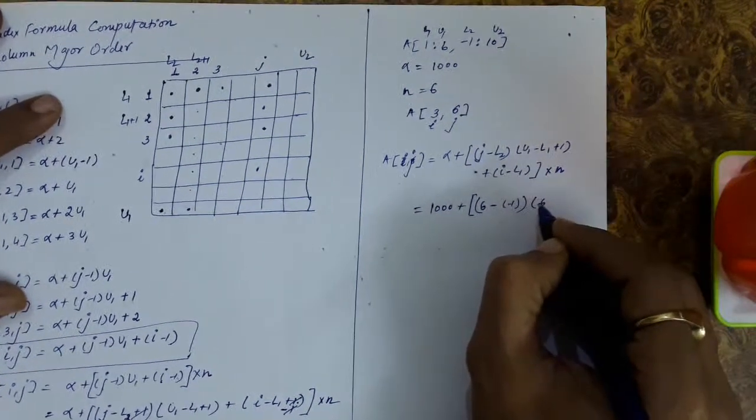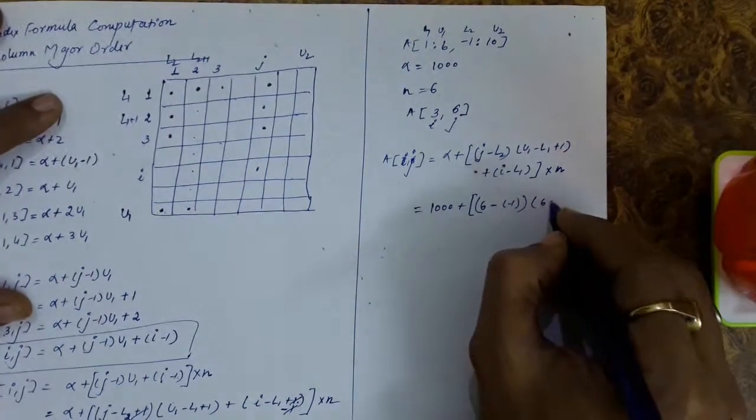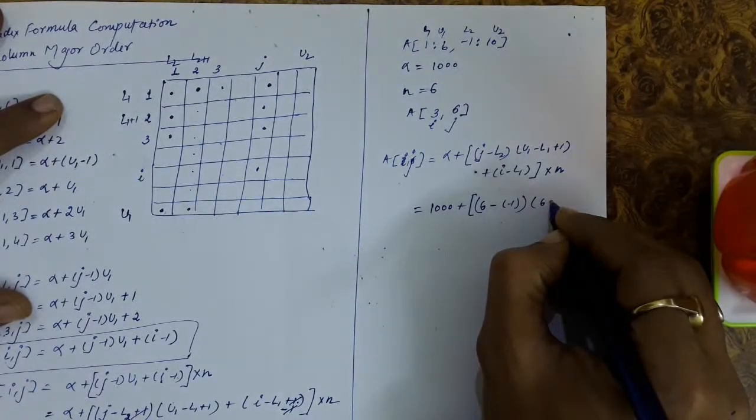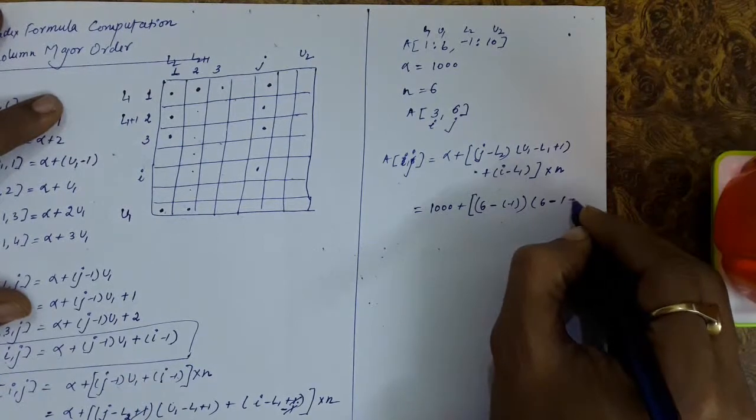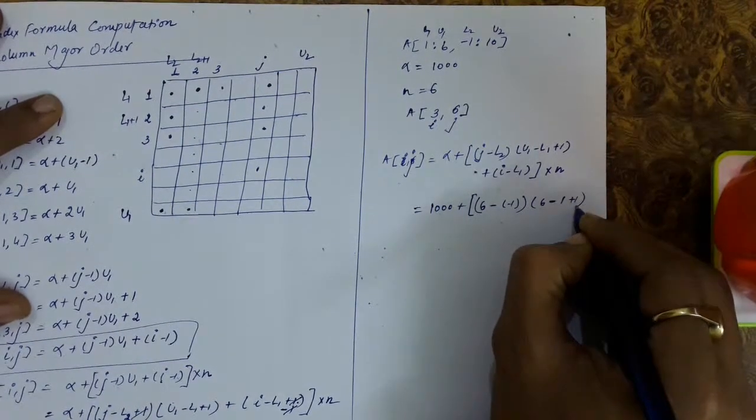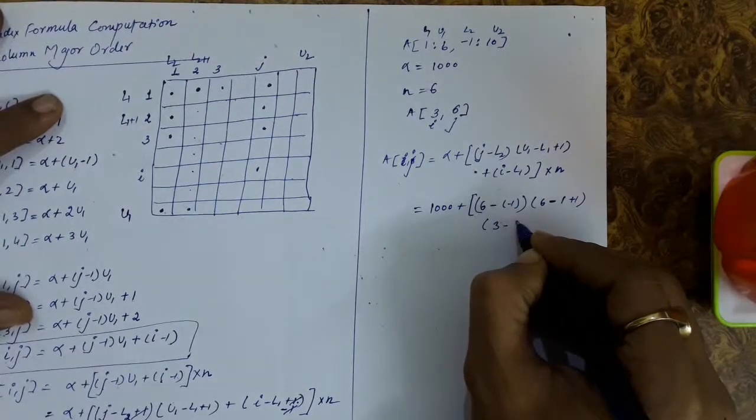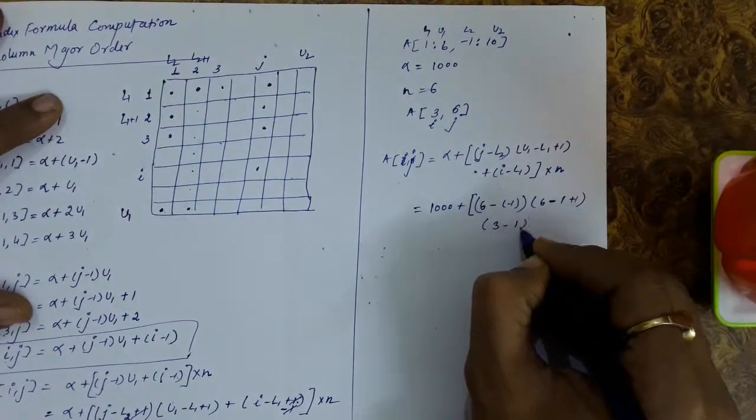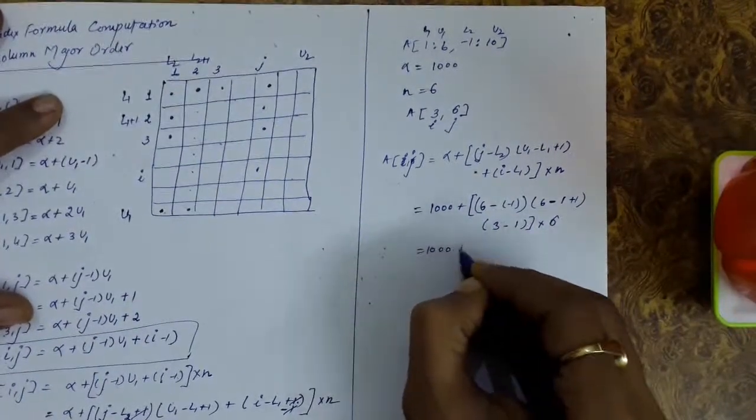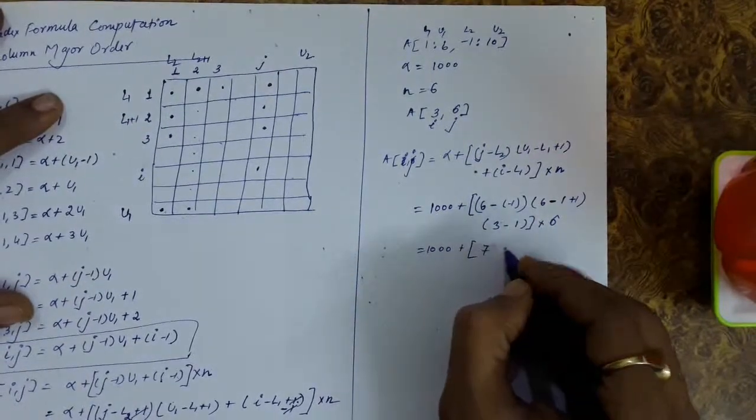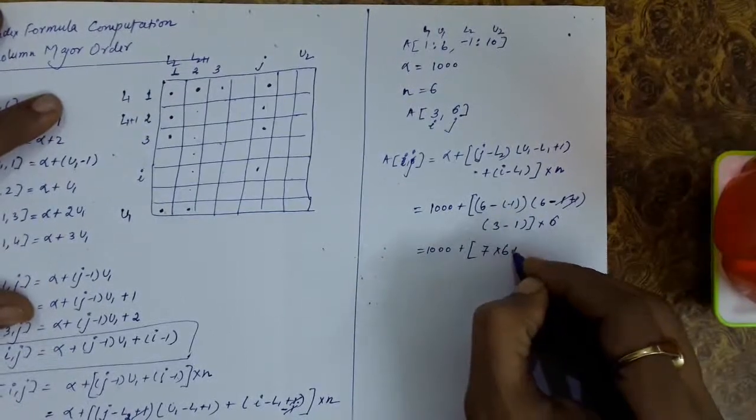Plus i minus l1 is 1 plus 1, and then i is 3 minus lower bound is 1, multiplied with m is 6. So this is 1000 plus 6 minus minus 1 is 7, 6 plus